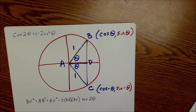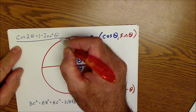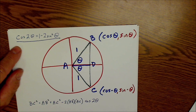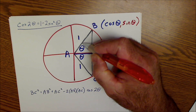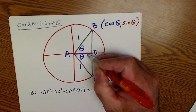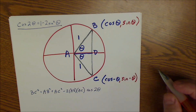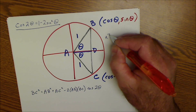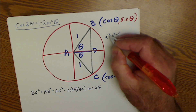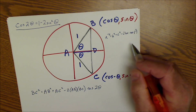I'm going to derive or prove where the double angle identity in trigonometry comes from: cosine of 2θ is equal to 1 minus 2 sine squared of θ. Where it comes from is I draw my unit circle — it has a radius of 1. This angle here would be θ and this angle here would be θ as well. I'm given this black triangle here, and I'm going to use the law of cosines, which is a² = b² + c² − 2bc·cos(A).